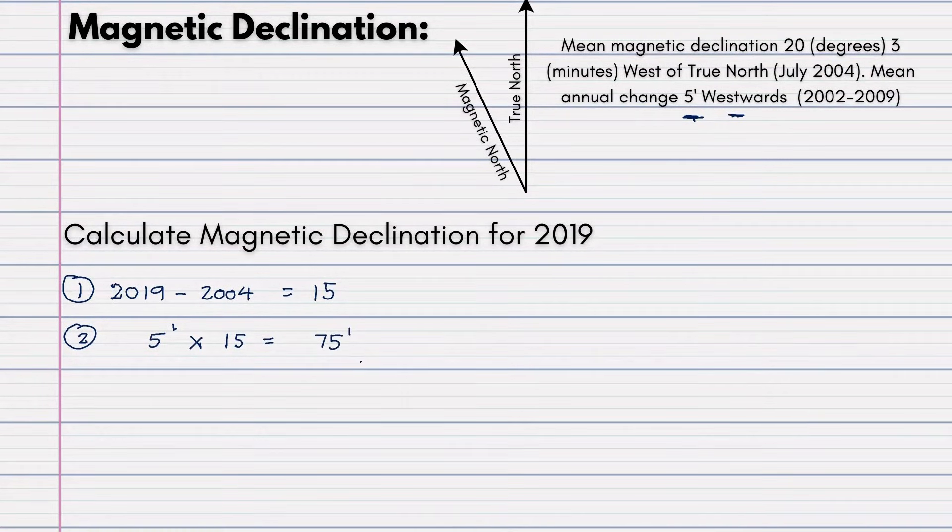Now remember, there is no such thing as 75 minutes. You will have to convert this into a degree and minutes. 60 minutes will make up 1 degree. And 75 minus 60 will be 15. Therefore, it will be 1 degree and 15 minutes. That would be the total change.